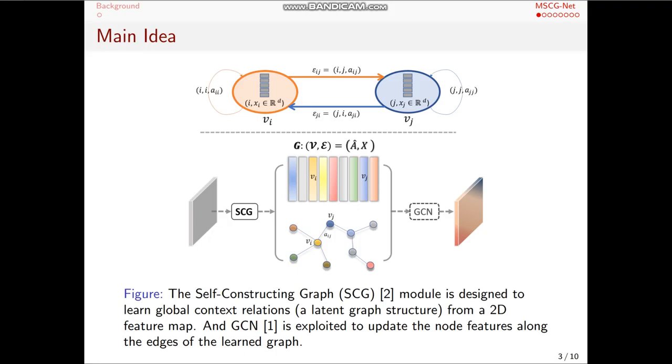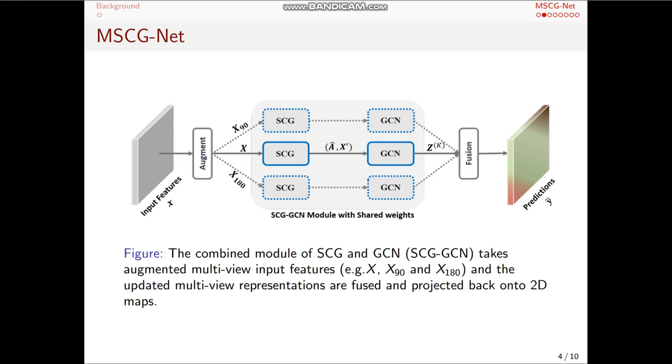And also to boost the basic SCG module, we extended the module to take augmented multi-view input features. For example, we rotate the feature maps into different degrees, and then the updated multi-view representations are fused together to project back onto the 2D domain. So we call it MSCG-Net, multi-view self-constructing graph network.